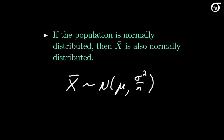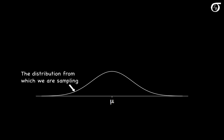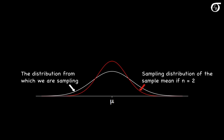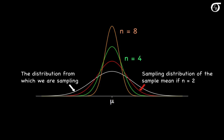Let's see what that looks like. Suppose we're sampling from this distribution, which is a normal distribution with a mean of mu and a standard deviation of sigma. The distribution given in red is the sampling distribution of the sample mean X bar for a sample size of 2. The distribution in green is the sampling distribution of X bar for a sample size of 4, and the distribution in orange is the sampling distribution of X bar for a sample size of 8.